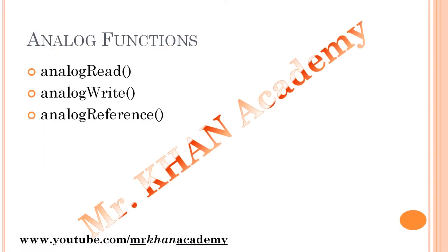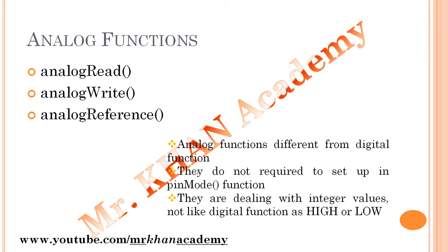Now let's continue with the theory. I hope you understood how DC motor control with a photocell works. We will cover the analog functions of Arduino programming. We are dealing with three analog functions: analogRead, analogWrite, and analogReference. Analog functions are different from digital functions — they do not require setup in pinMode, as we saw in this video. We are using predefined analog pins A0 to A5 for input, and PWM pins 3, 5, 6, 9, 10, 11 for analog output. Also, analog functions deal with integer values, not just high/low (0 and 1) like digital functions.